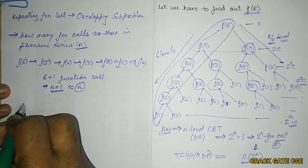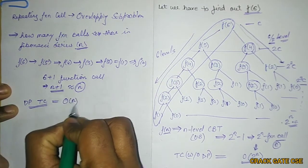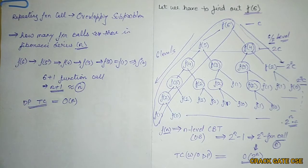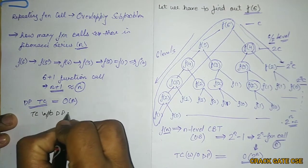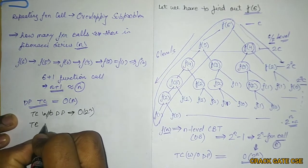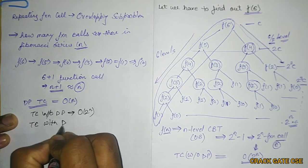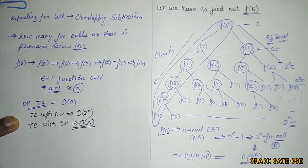With dynamic programming, we execute only n distinct function calls. Storing values into the table takes constant time per call, so the time complexity of Fibonacci with dynamic programming is O(n). This is a significant reduction from O(2^n) without dynamic programming down to O(n) with dynamic programming.